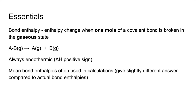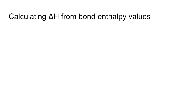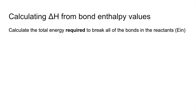We often use mean bond enthalpies in calculations, and they will give you a slightly different answer compared to actual bond enthalpies. The method to calculate delta H from bond enthalpy values involves first calculating the total energy needed to break all of the bonds in the reactant — I refer to that as energy in, E in.